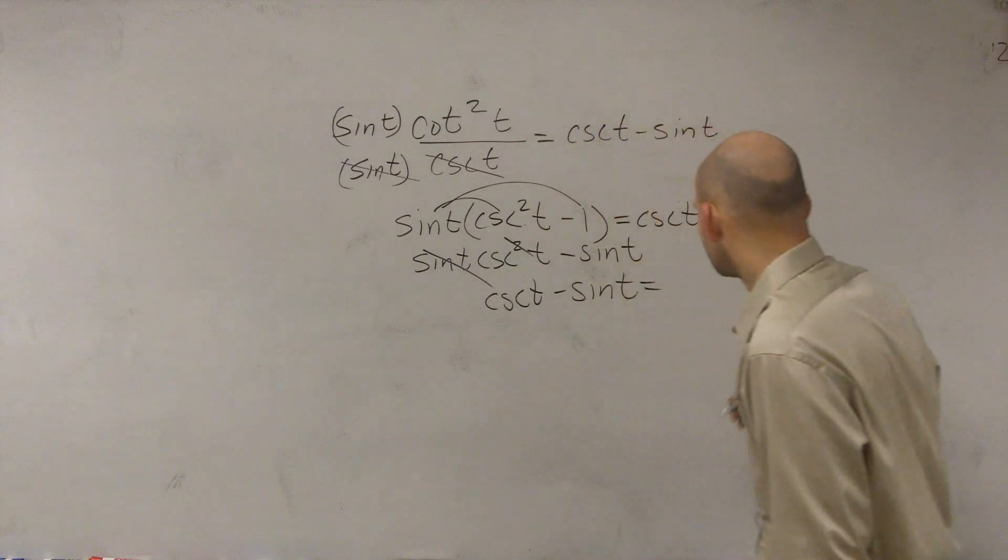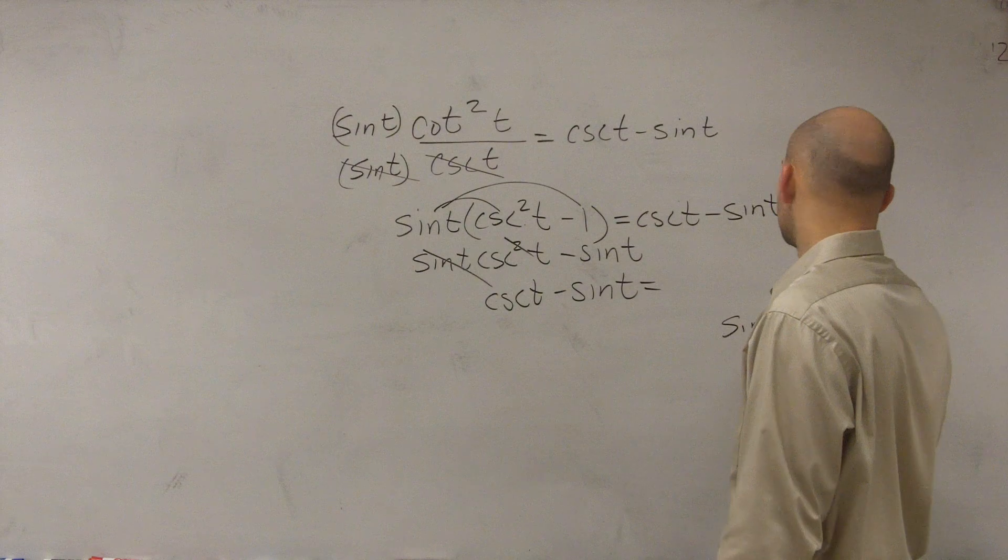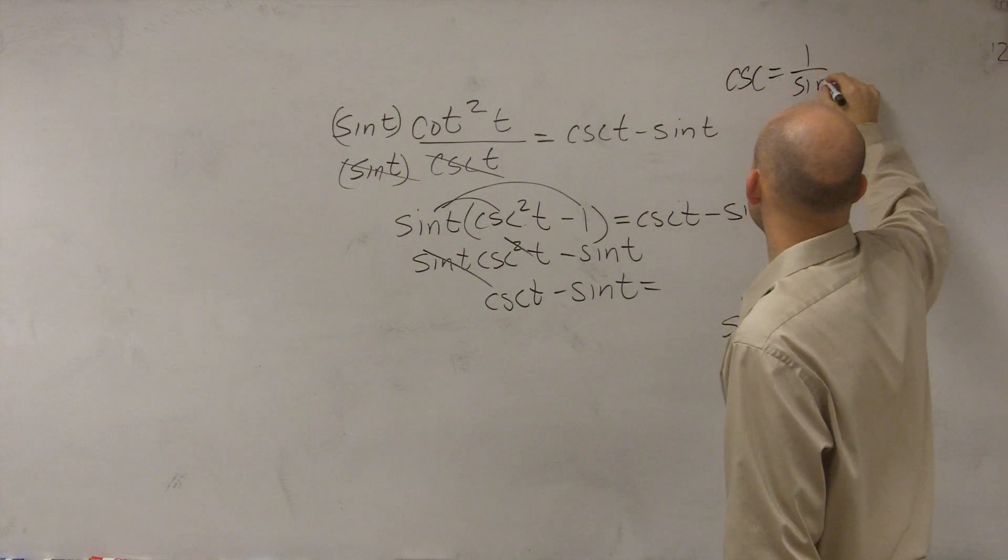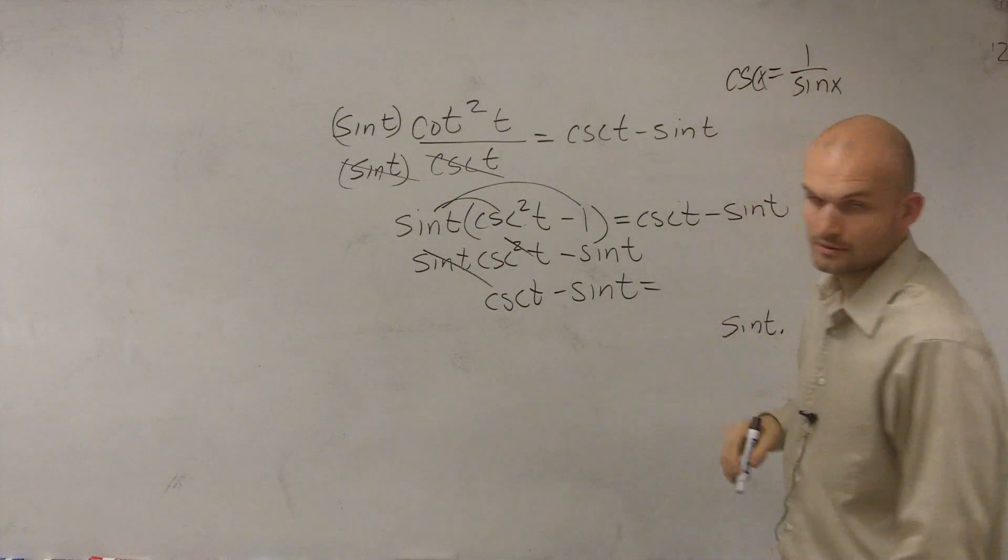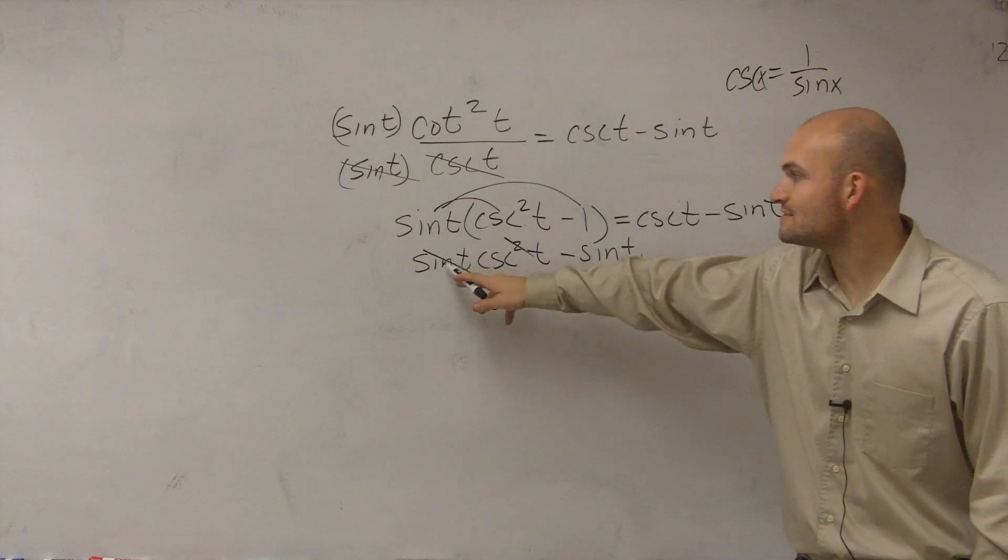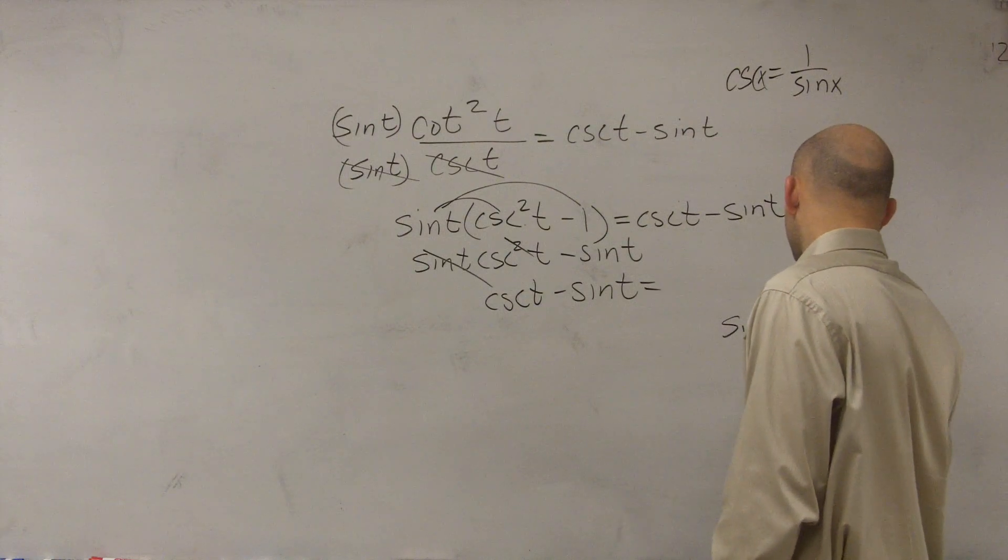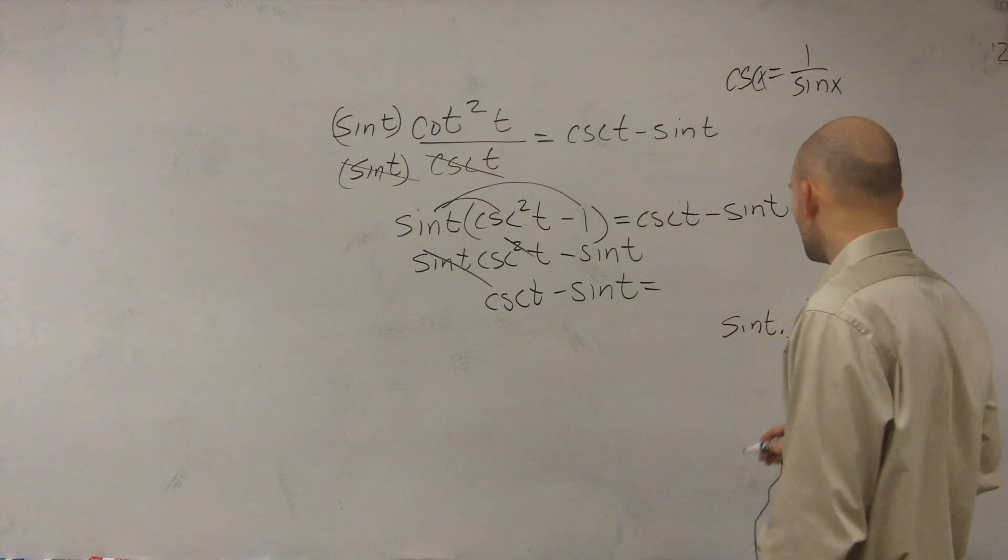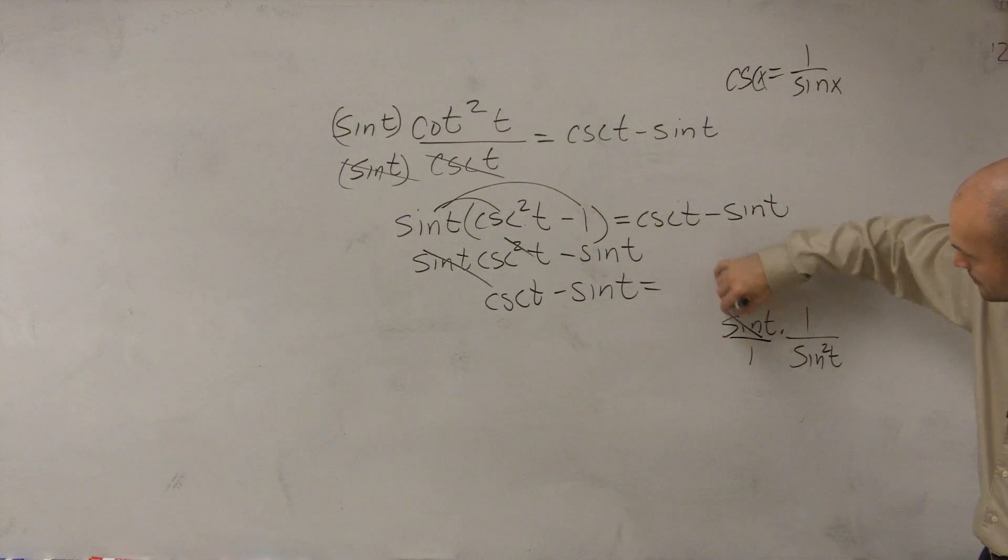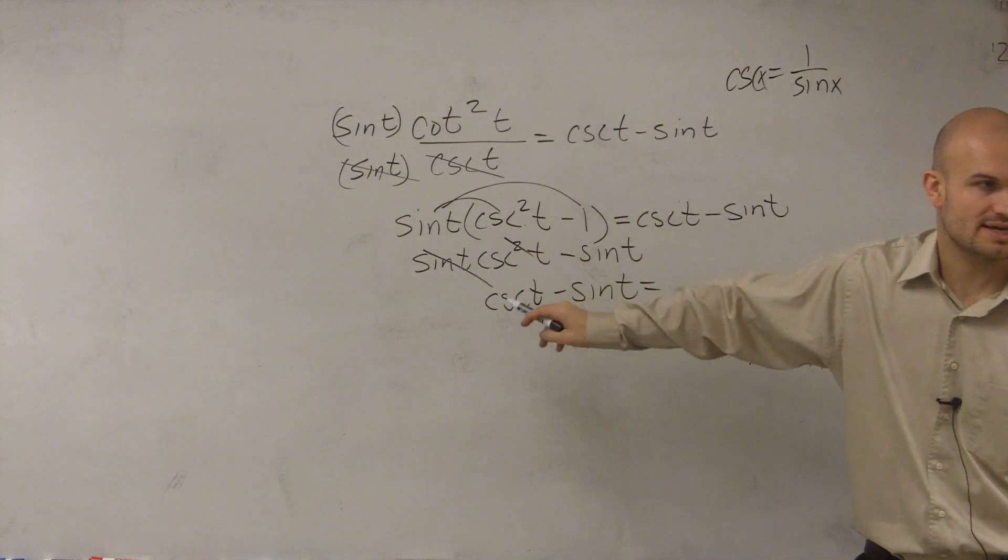OK. So remember, ladies and gentlemen, sine of t times cosecant is equal to 1 over sine. So therefore, when I'm multiplying this, I have sine of t times cosecant of t. So therefore, that's 1 over sine of t squared. So therefore, you're just going to be left with 1 over sine, which is cosecant of t. Does that make sense?